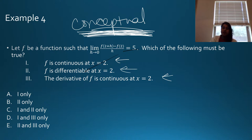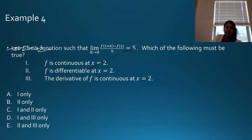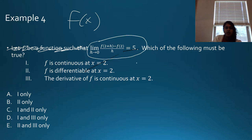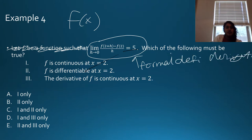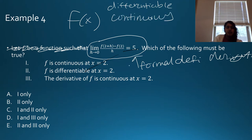Let f be a function. The limit expression given equals 5 — that's the formal definition of a derivative. If that's the formal definition of a derivative, it tells me f(x) is differentiable. And if f(x) is differentiable, that means f(x) must also be continuous. So: is f(x) continuous? Yes. Is it differentiable? Yes.